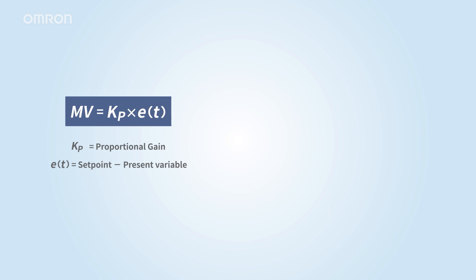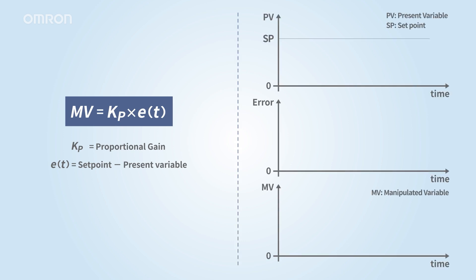In proportional control, the heater's output adjusts based on the difference between target and current temperatures. With only P control, the temperature will stabilize before it reaches the target. The gap is known as offset.